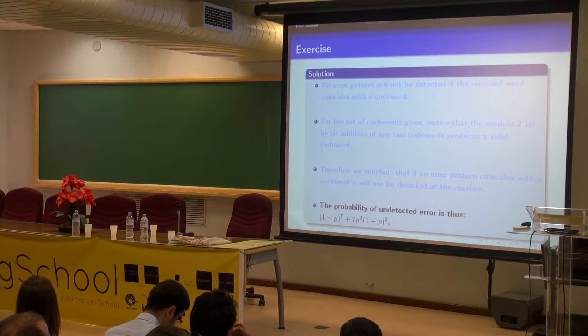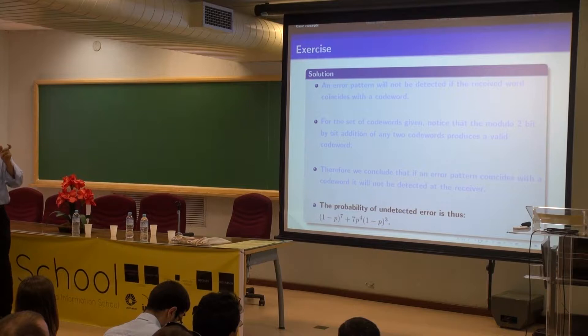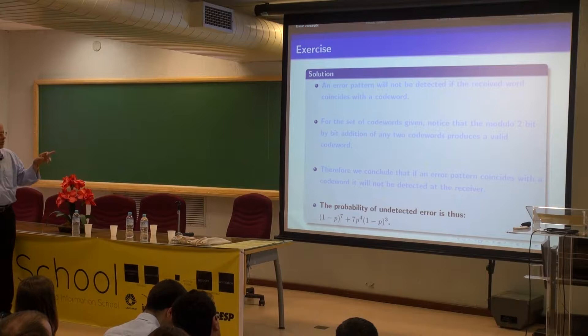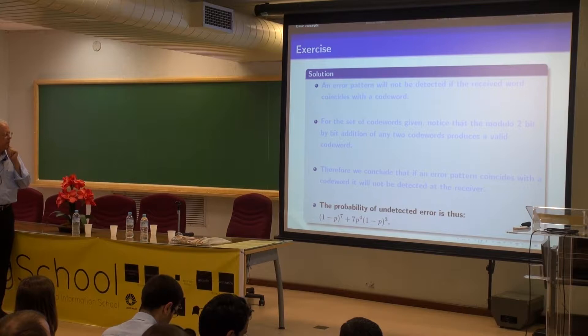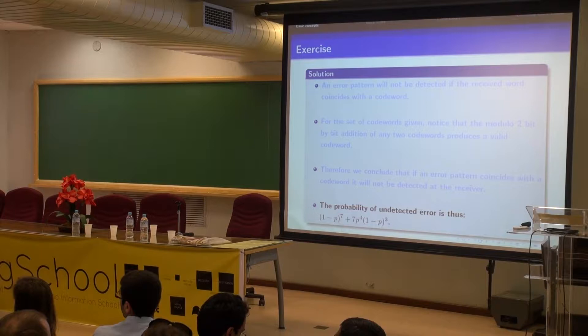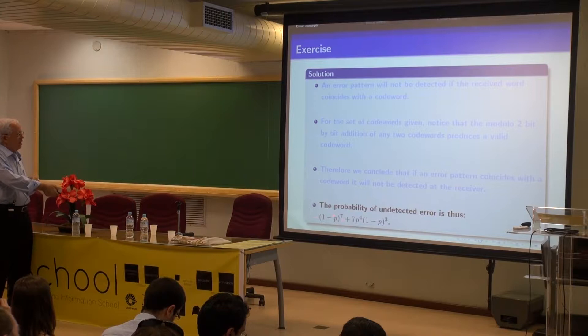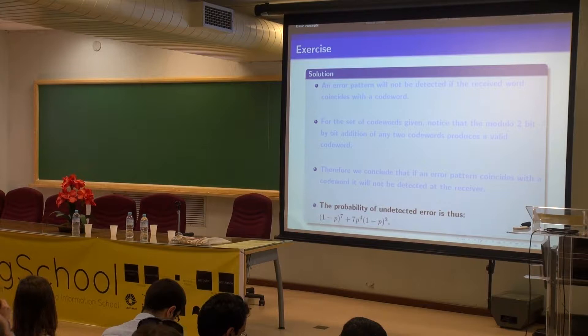The answer for the probability of undetected error is just the probability of a pattern like one of those code words occurring. If it's the all-zero code word, you have errors acting independently — p is the probability of error, probability of being correct is 1 minus p — so it's (1 minus p) to the power 7. For the other seven code words, they all have four ones and three zeros, and the probability would involve p to the four times (1 minus p) to the three.